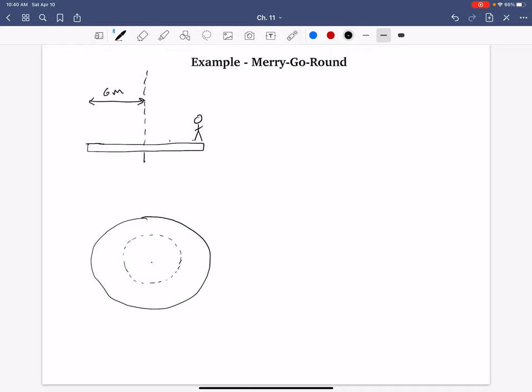The question to be solved is, if this person were to walk towards the center by a distance of three meters, such that they'll end up at half the radius from the center, what will be the final angular speed of the system? And I say the system because the final omega for the person and the merry-go-round will be the same. In other words, they're not going to slip or slide on the surface.